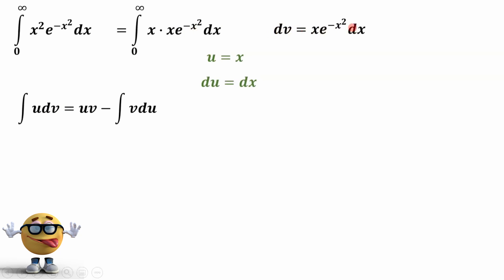Now to evaluate this, to find out what v is, we need to integrate this. But to integrate this, we've got to do a substitution. So we'll set n equal to negative x squared. Therefore, the derivative of n with respect to x equals negative 2x. Some people use a u for u substitution, but it's just a variable, and we already used u here.